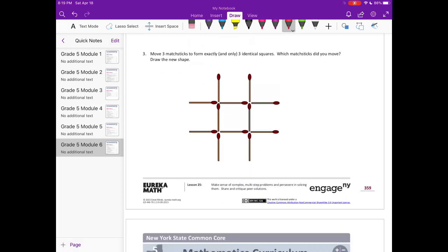And number three, move three matchsticks to form exactly and only three identical squares. Which matchsticks did you move? I'm going to start by removing the top two matchsticks, and I'm going to put one there, I'm going to put one there, I'm going to move one right there. Now we have three identical squares right now, but we've only moved two matchsticks, so I still need to move another one.